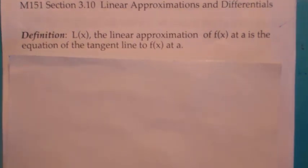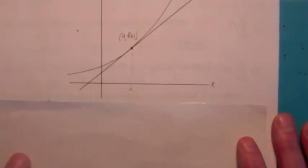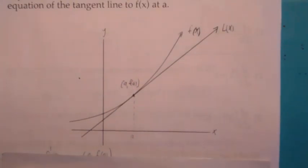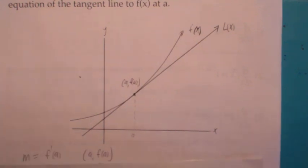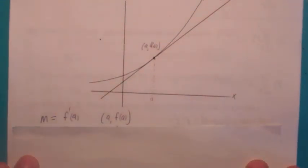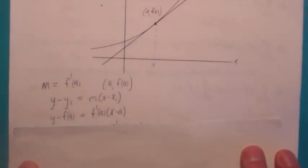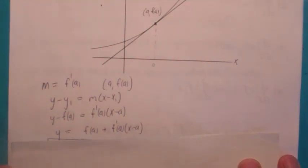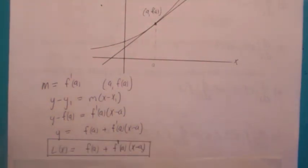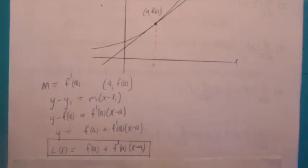L, the linear approximation of f at a, is just the equation of the tangent line to f at x equal a. We have a function at x equal a, assuming the function is differentiable. Use the point-slope formula: the slope is f prime of a, and the point is (a, f of a). By the point-slope formula, y minus y1 equals m times x minus x1. Plug everything in and solve for y: you get y equals f of a plus f prime of a times x minus a.